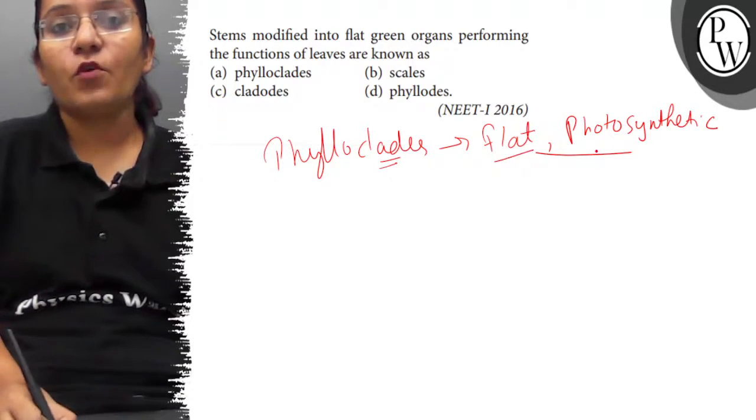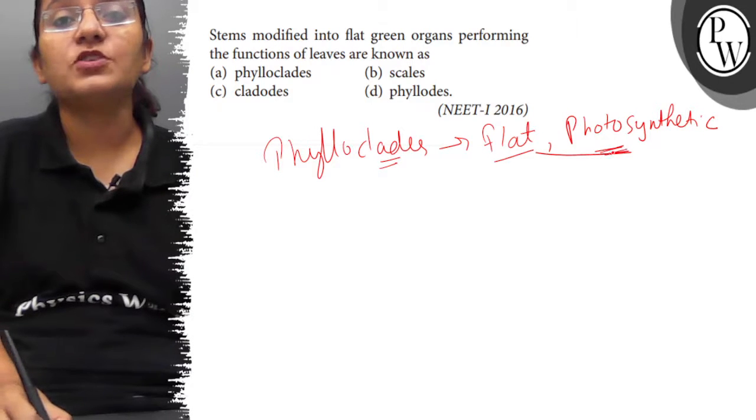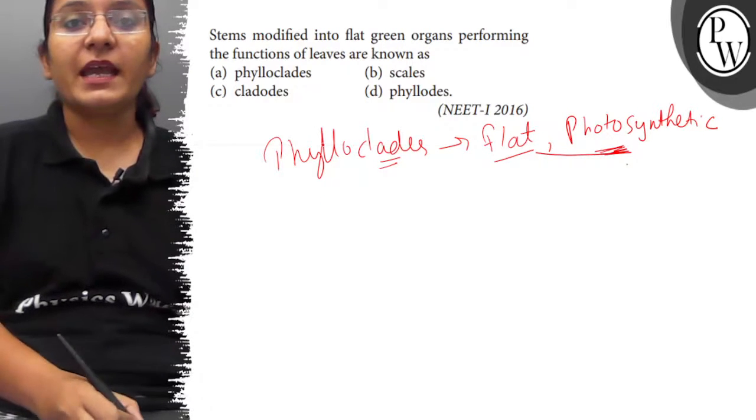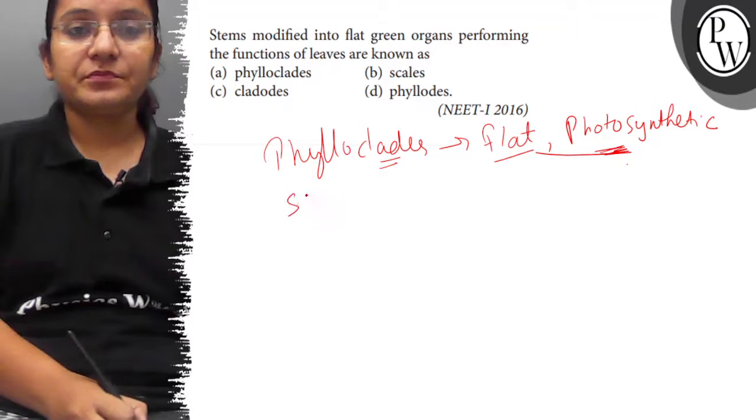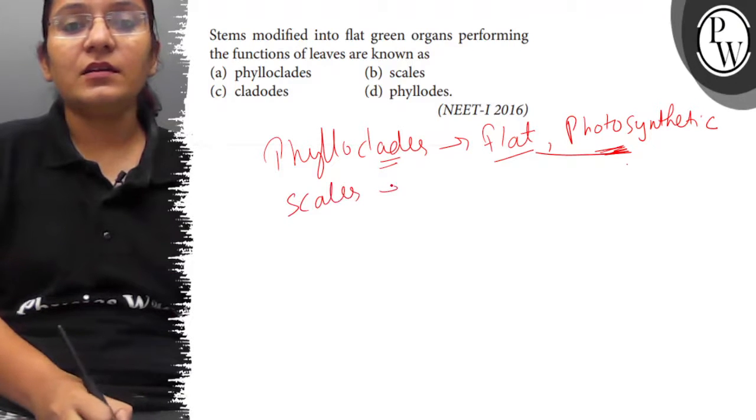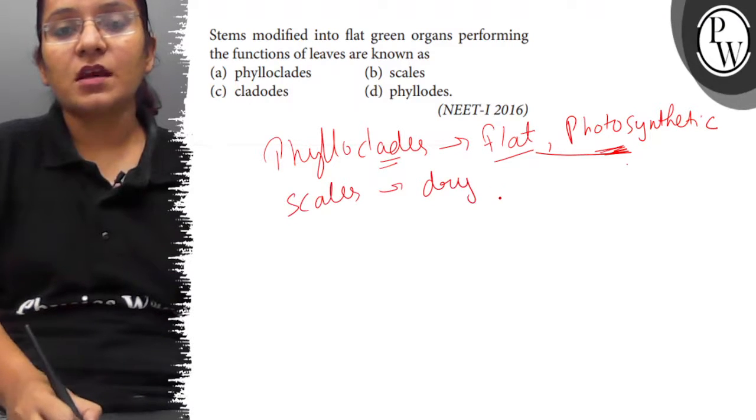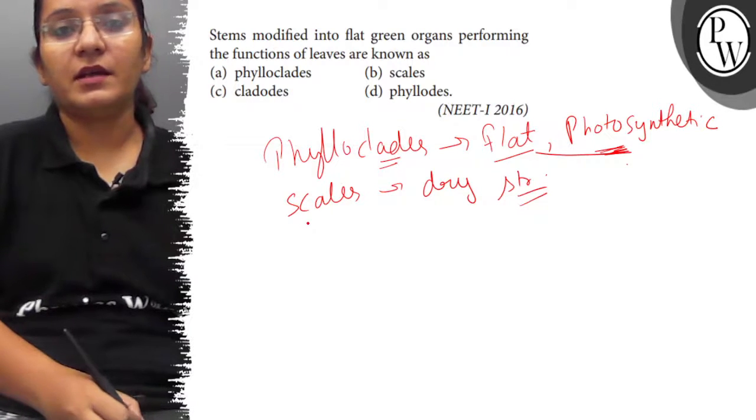The stem becomes flat and photosynthetic, meaning it performs the function of leaves. Second is scales - scales are dry structures present in the plant.